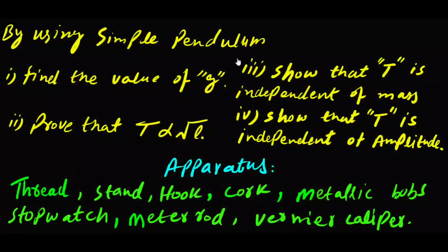By using a simple pendulum: number one, find the value of gravitational acceleration g; number two, prove that time period of pendulum is directly proportional to square root of length of pendulum; number three, show that time period is independent of mass; number four, show that time period of pendulum is independent of amplitude.